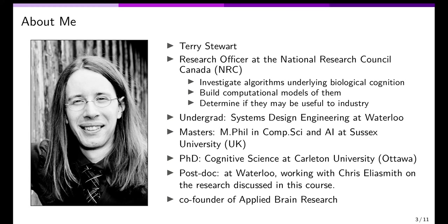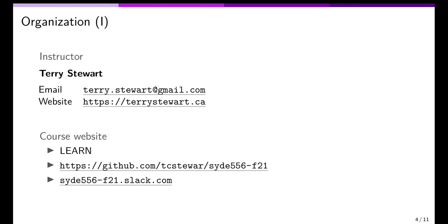I've basically been working on this stuff for the last 10 to 13 years and I very much enjoy it — I can't imagine what else I'd want to work on. For basic organizational information: there's my email and website. The course is being run through the Learn system at the University of Waterloo, since this is an online course. There is also a GitHub page that will have all the slides, notes, assignments, and related materials. For discussion, we're going to use Slack — I'll send an invite to everyone through the Learn system. I find Slack a bit nicer for immediate back-and-forth conversation.